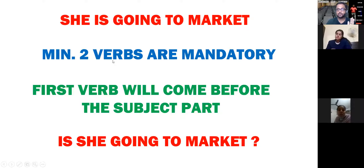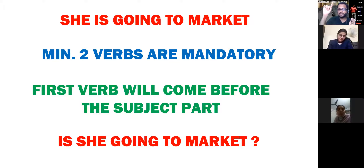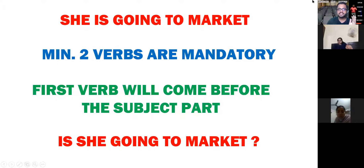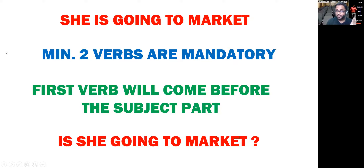So the sentence becomes 'Is she going to market?' And whenever we use an interrogative sentence, at the end we use a sign of interrogation — also called a question mark. So the interrogative sentence is: 'Is she going to market?' — क्या वो market जा रही है? क्या वो बाज़ार जा रही है? This is the way we make an interrogative sentence.